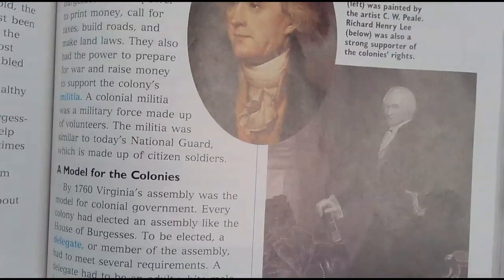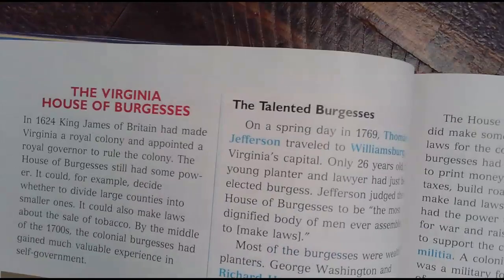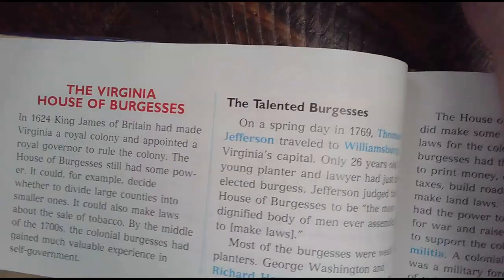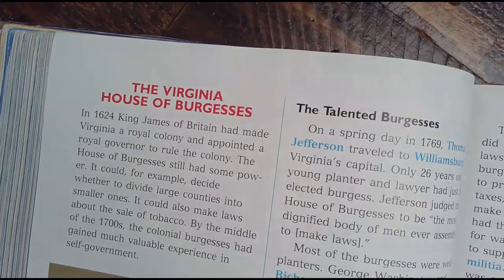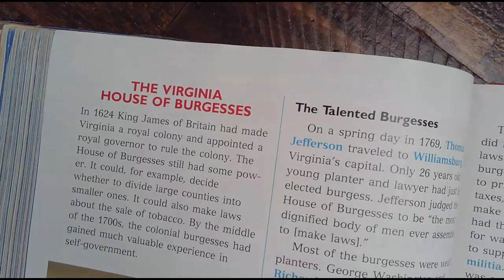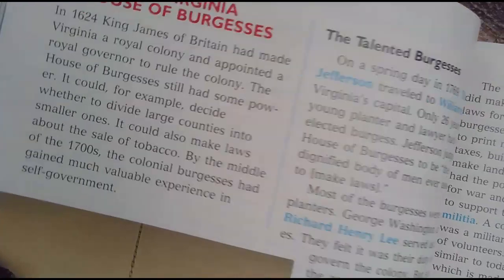Turn the page — The Virginia House of Burgesses. In 1624, we haven't seen any of these people yet: King George III, Patrick Henry, Paul Revere, George Washington. Keep an eyeball out for them.